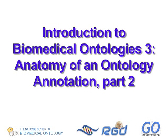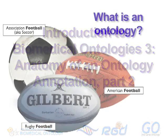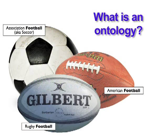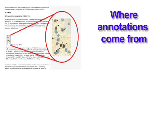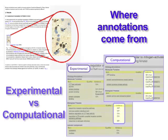This video is the third in a series of tutorials about biomedical ontologies. In the first two videos, we talked about what an ontology is, where annotations come from, and how to tell the difference between experimental and computational annotations.